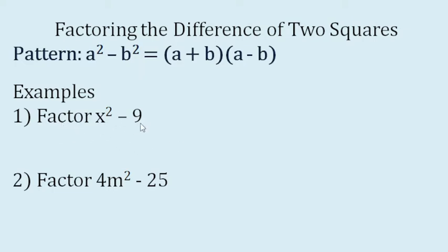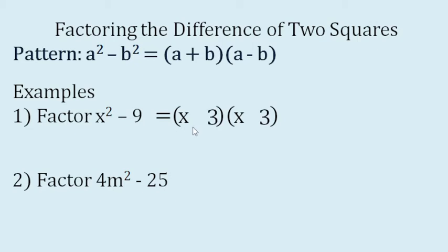Factor x squared minus nine. So there are two binomial factors. The square root of x squared is x, and the square root of nine is three. Then we will just place plus and minus signs. These are the factors: the quantity x plus three times the quantity x minus three.